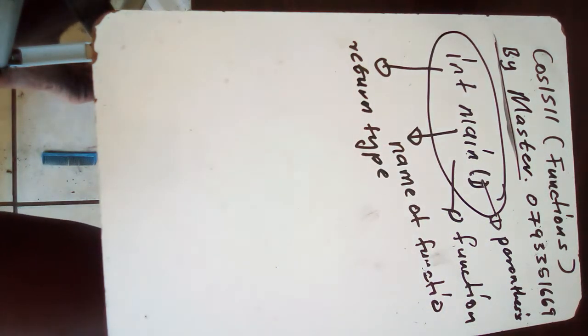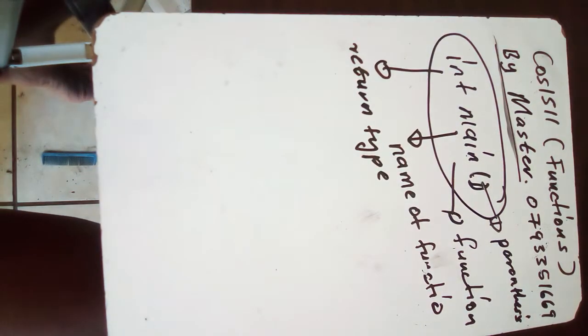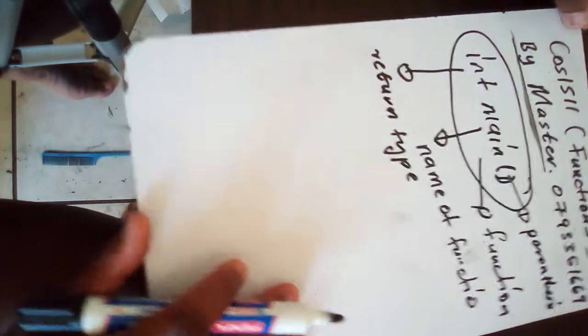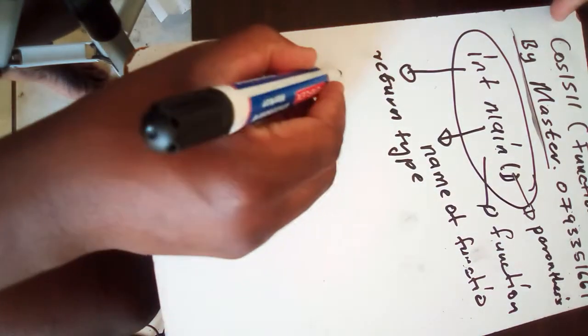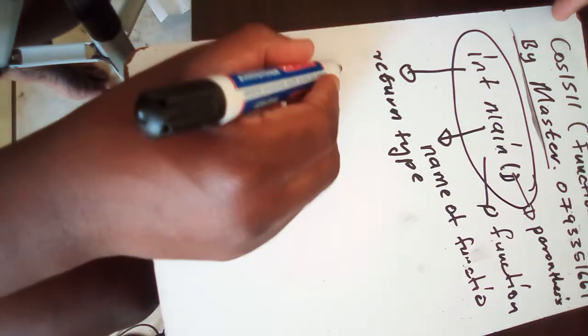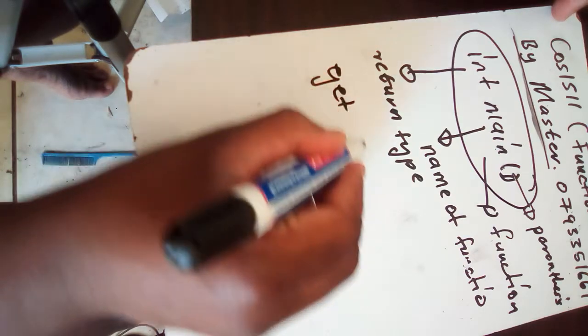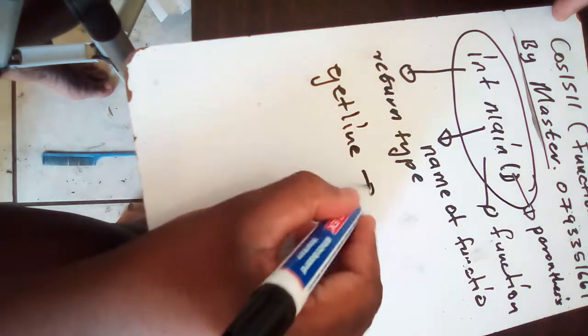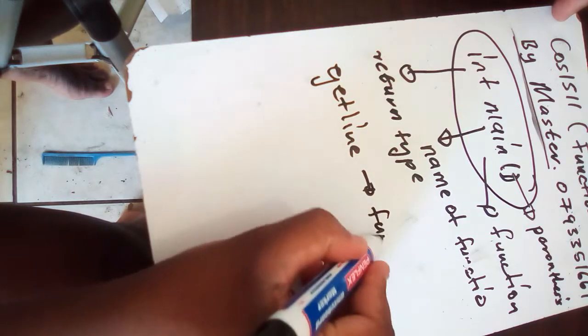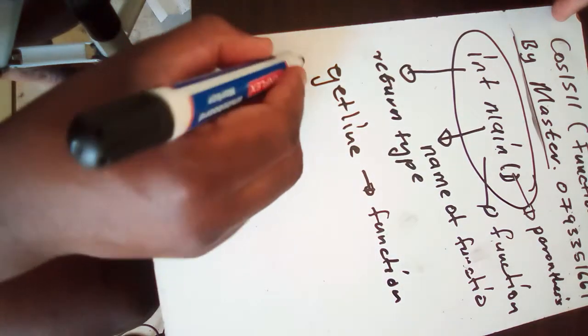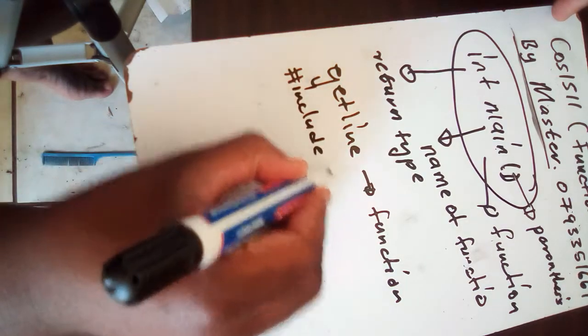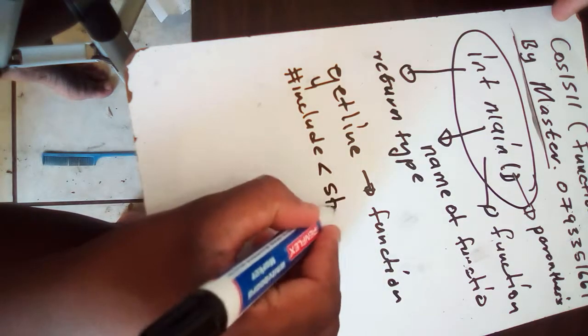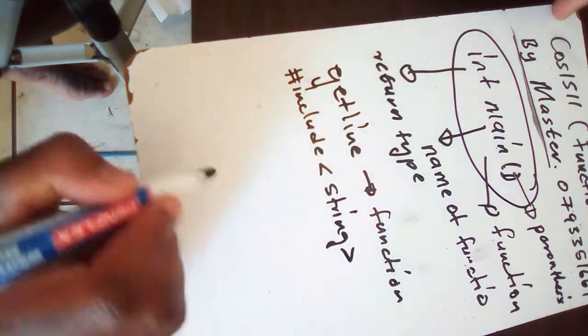As time goes on, inside the parenthesis you're gonna be writing some things like int, float x, float y, something like that. The functions that I want to talk about today are called preliminary functions. When we're doing a string, we talked about getline. Getline is also a function, and this function uses hash include strings so that it can work.